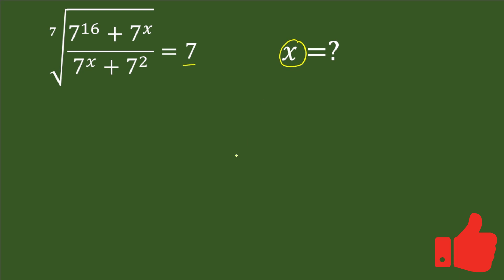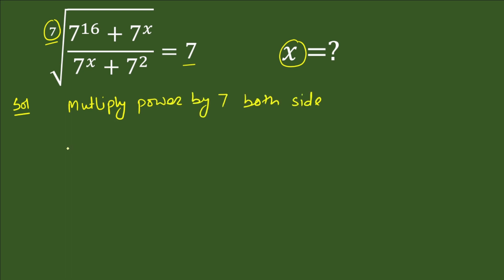Before we start, please give a thumbs up to the video. Now let's start the solution. Here in this question we have square root of 7, and for removing this square root we will multiply both sides by power 7.